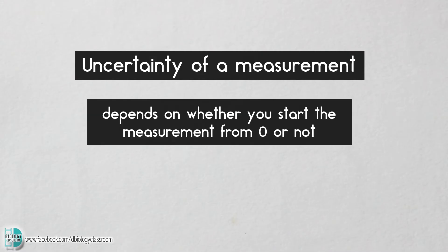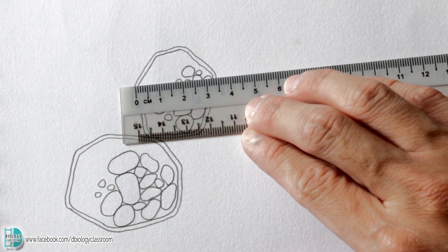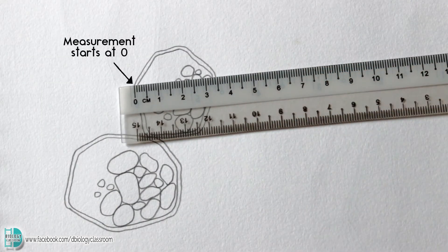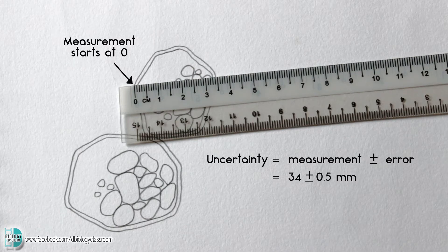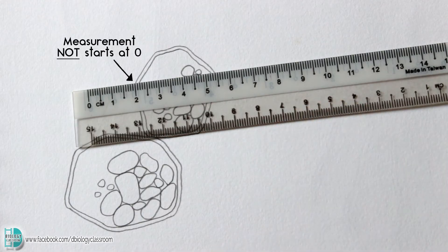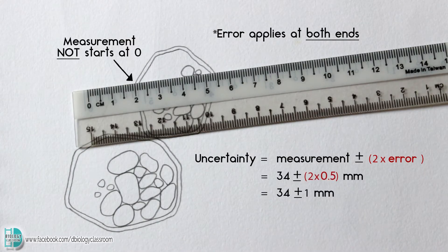Uncertainty of a measurement depends on whether you start the measurement from 0 or not. Let's use this ruler as an example. If you measure this drawing of a cell and you start the measurement from 0, the uncertainty will be the measurement plus-minus the error. In this case, it will be 34 ± 0.5 mm. If you start the measurement other than 0, the error applies at both ends, so the uncertainty of the measurement will be the measurement plus-minus 2 times the error. In this case, the uncertainty is 34 ± 1 mm.